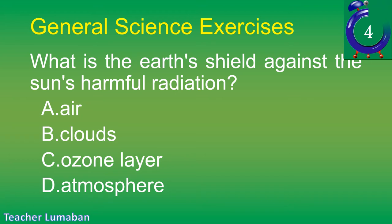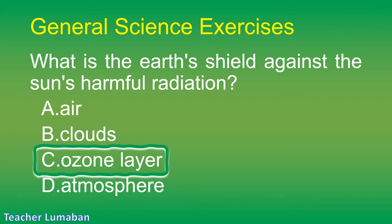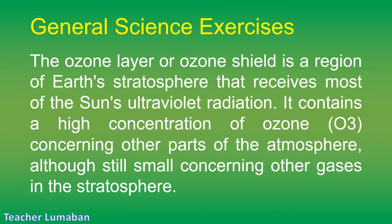The correct answer is Letter C: ozone layer. The ozone layer or ozone shield is a region of Earth's stratosphere that absorbs most of the sun's ultraviolet radiation. It contains a high concentration of ozone (O₃) concerning other parts of the atmosphere, although still small concerning other gases in the stratosphere.